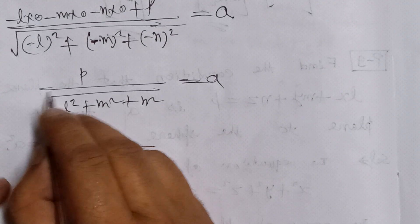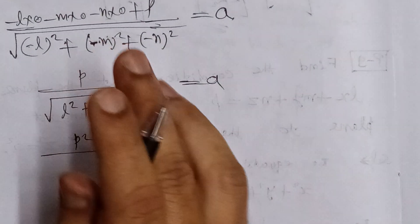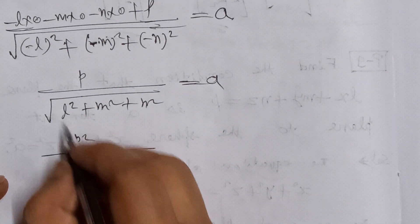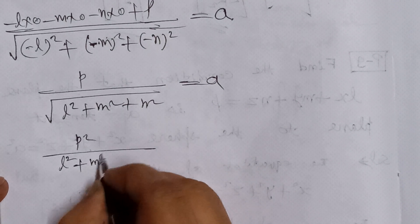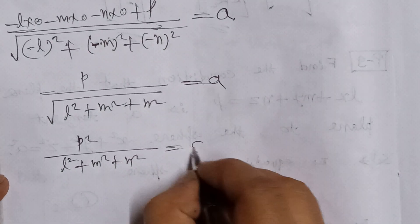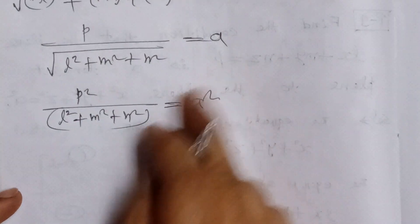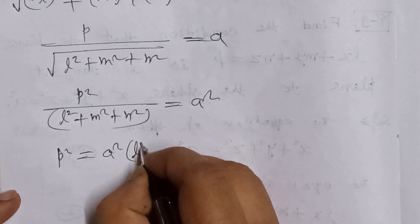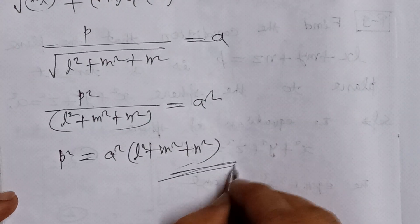We can leave it here or, by squaring both sides, we get p² / (l² + m² + n²) = a². On squaring, the square root will be eliminated. Transposing this value, we get p² = a²(l² + m² + n²). This is the required condition.